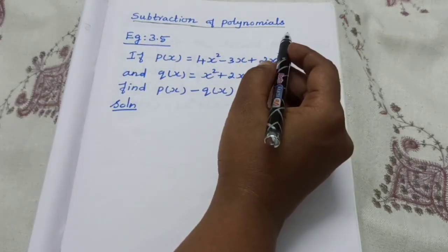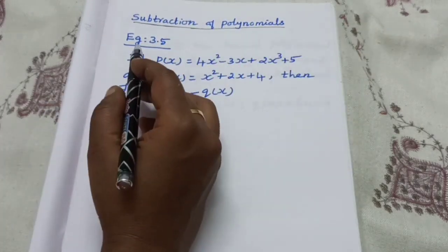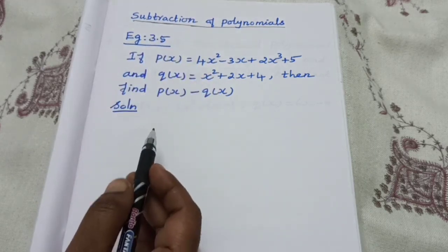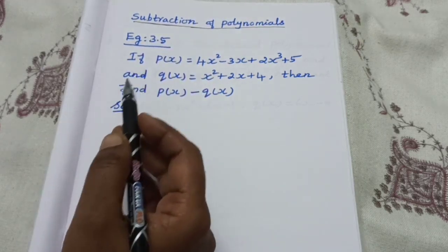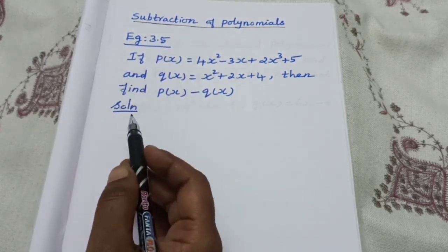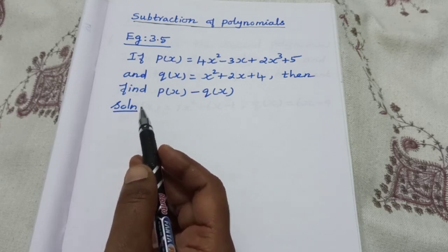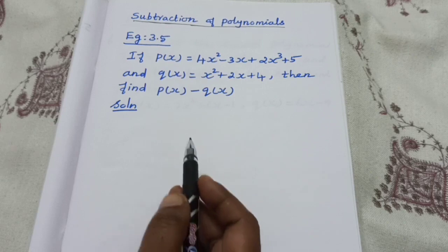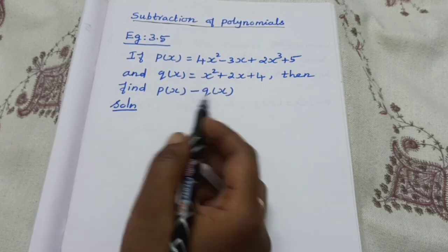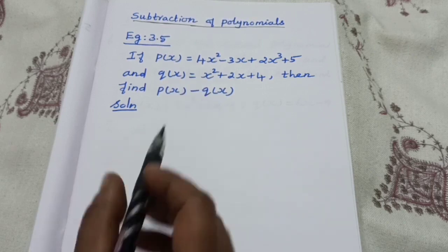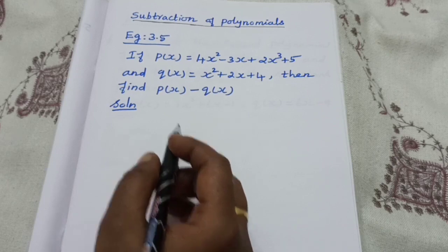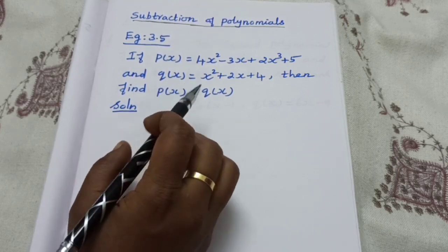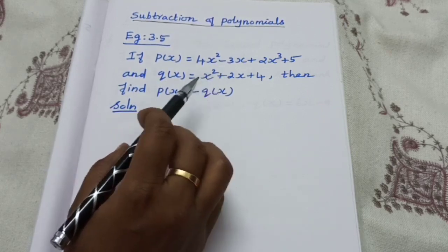Now let's see subtraction of polynomials. Subtraction is the same as addition. The subtraction of two polynomials is also a polynomial. Only like terms can be subtracted — unlike terms cannot be subtracted.